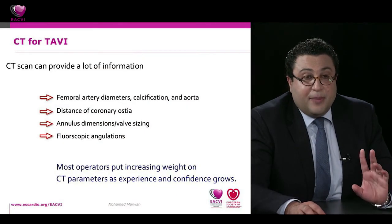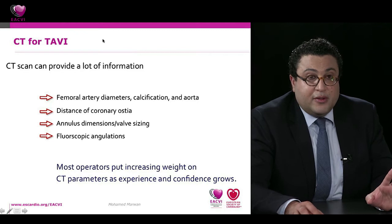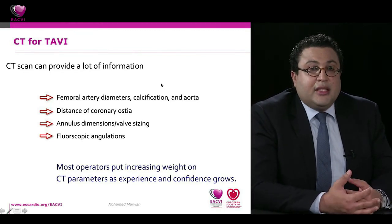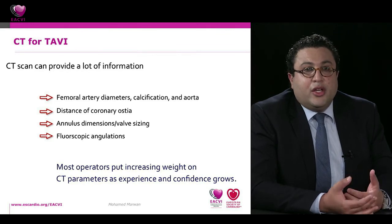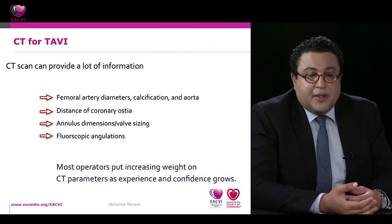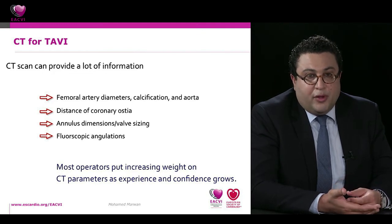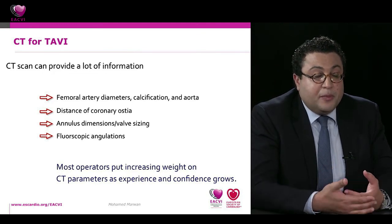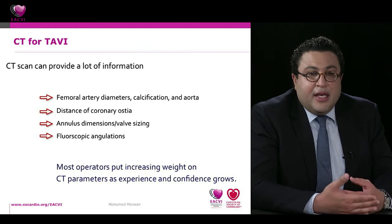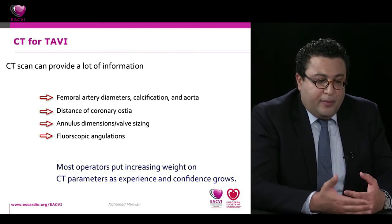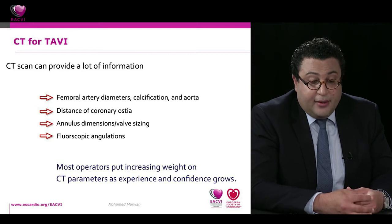CT can provide, essentially for free, the fluoroscopic orientation suitable for implantation. For balloon-expandable prostheses, the implanter wants the right cusp centered on screen with left and non-coronary cusps symmetrically on either side — a strictly orthogonal view. After adjusting the annular plane in CT, the exact C-arm angulation providing this orthogonal view can be predicted and given to the cath lab. This saves multiple aortographies during implantation, reducing contrast and x-ray exposure.